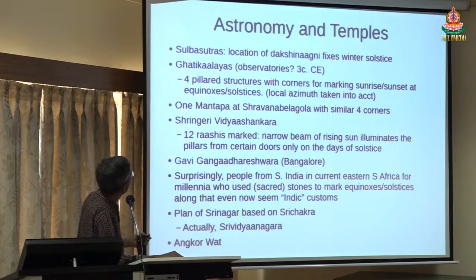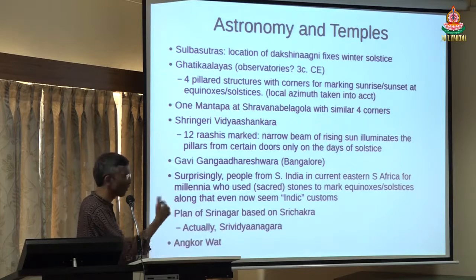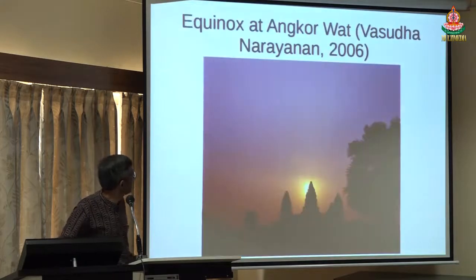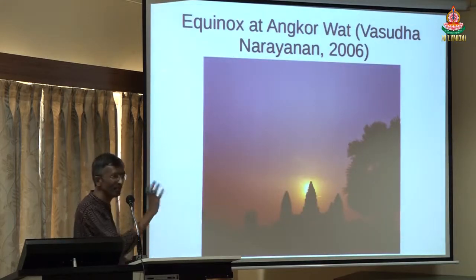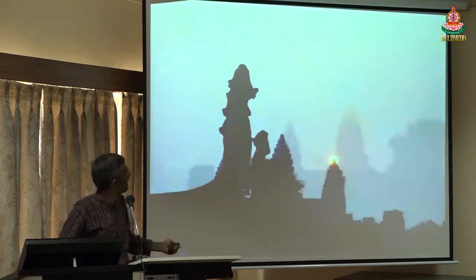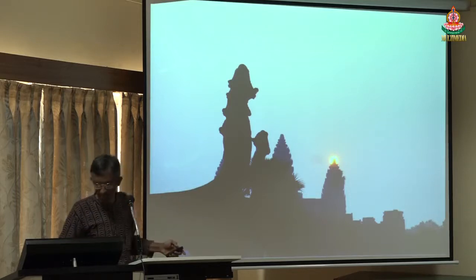There are Ghatikalayas where basically the marking of sunrise and sunset at equinoxes and solstices is done using certain structures. Similarly you will find it in Mantapas, in Shamanadal Gola. In Sringeri, the Vidya Shankara temple, you will find that 12 rashis are marked — when the rising sun comes in, it actually illuminates that particular rashi. In Bangalore also, there is a Gavi Ganga temple with similar structures. You will see it very strikingly in the case of Angkor Wat: at equinox, particular spires are actually illuminated — some people have taken pictures of this.